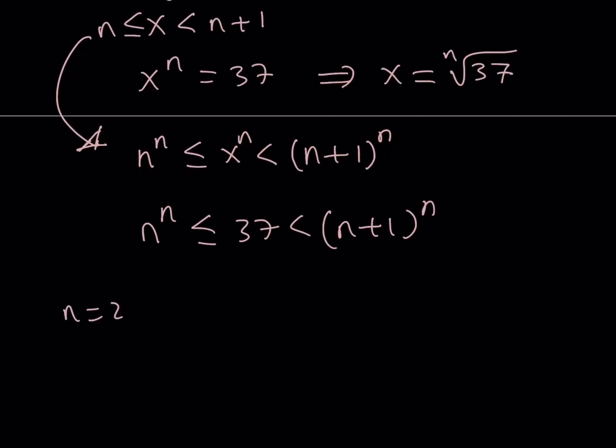If n is equal to 2, then I get 2 to the second and 3 to the second. Obviously, 37 is not between 4 and 9, so this is not valid. Make sense?